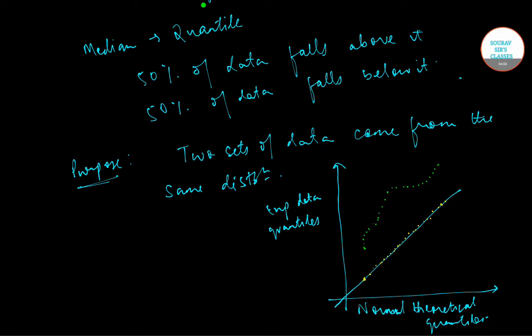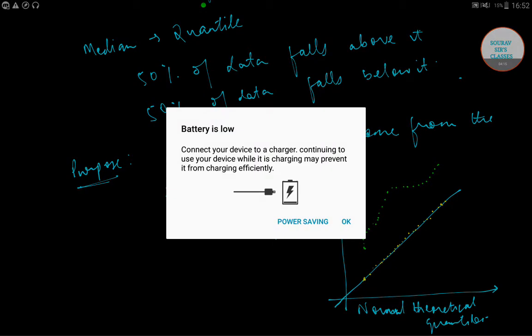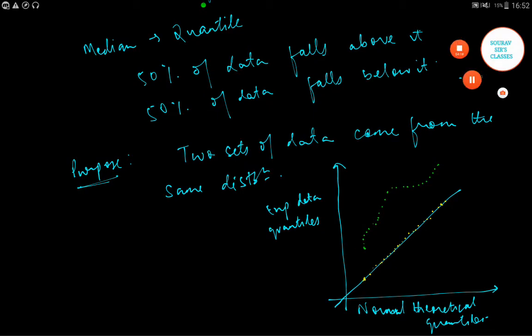However, you don't have to use a normal distribution as a comparison for your data. You can use any continuous distribution as comparison, as long as you can calculate the quantiles. In fact, a common procedure is to test out several different distributions with the QQ plot to see if one fits your data well. Thank you for watching the video.